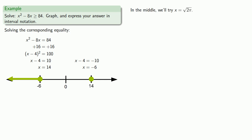In the middle, we'll try x equals 0. Substituting that into our inequality, this is false, so we exclude the middle.